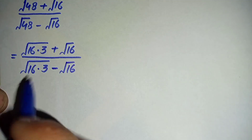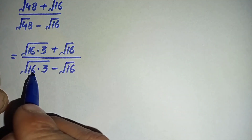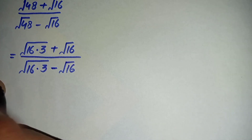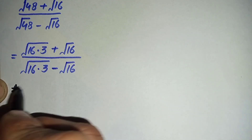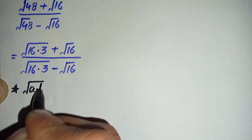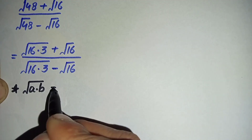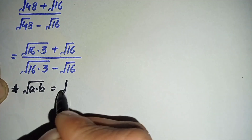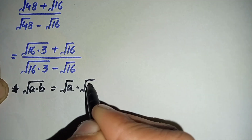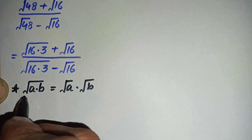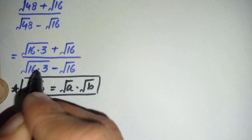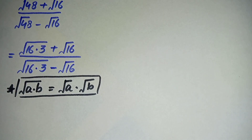Now here in the numerator and denominator we will use a square root math property. The property is: square root of a times b can also be written as square root of a times square root of b. By using this square root property, this equation will become...